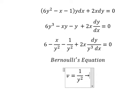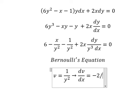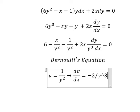If we take the first derivative of both sides, we have dv over dx equals negative 2 over y to the power of 3 times dy over dx.